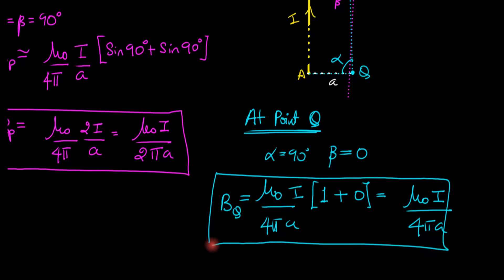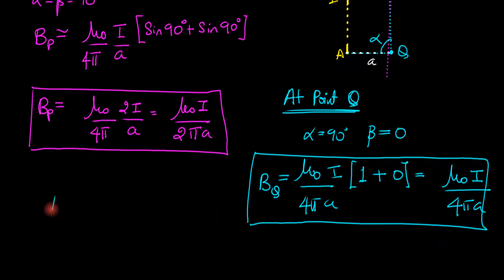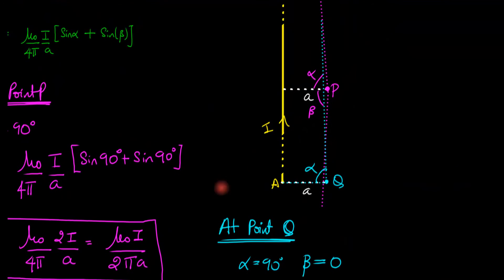Now notice that the magnetic field at Q is actually half of the magnetic field at point P. This tells us that as you go farther and farther away from the midpoint towards the edge, the magnetic field dies out. It becomes lower and lower in value, and that makes a lot of sense.